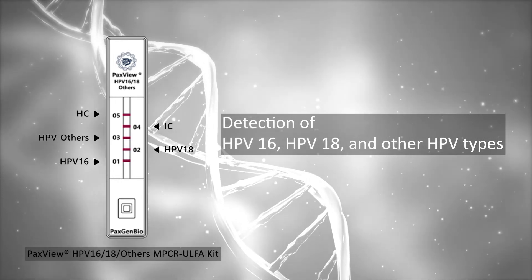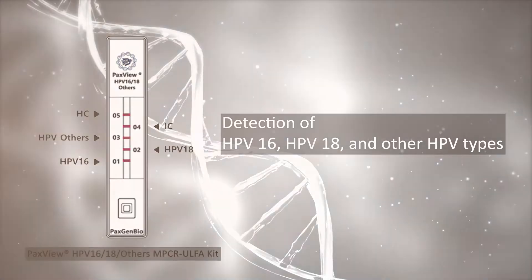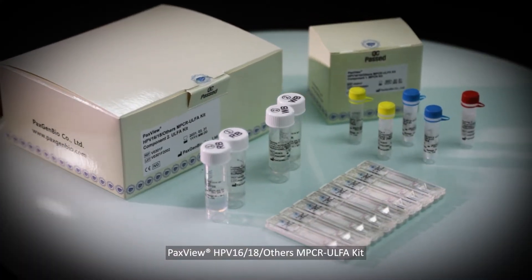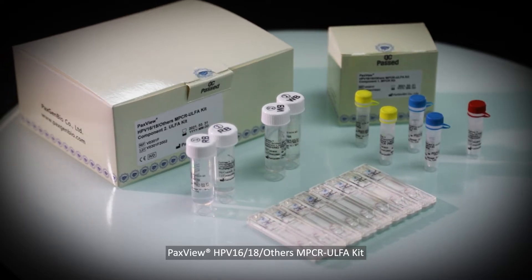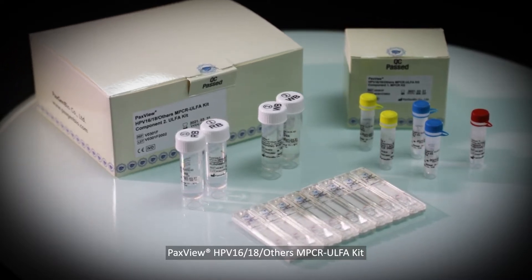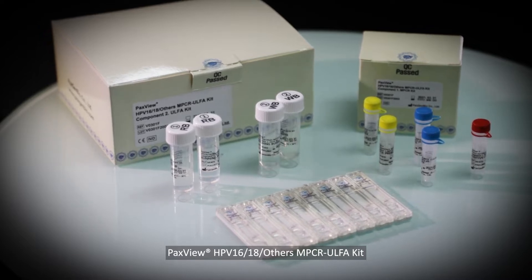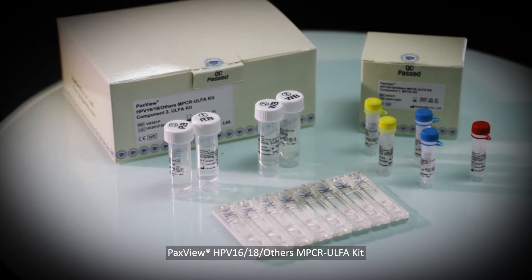The PaxView MPCR Alpha Kit is composed of MPCR Kit and Alpha Kit. The MPCR Kit includes PCR enzyme premix and primer mix for PCR amplification. The Alpha Kit includes alpha cartridges, running buffer, and washing buffer for detecting PCR products.